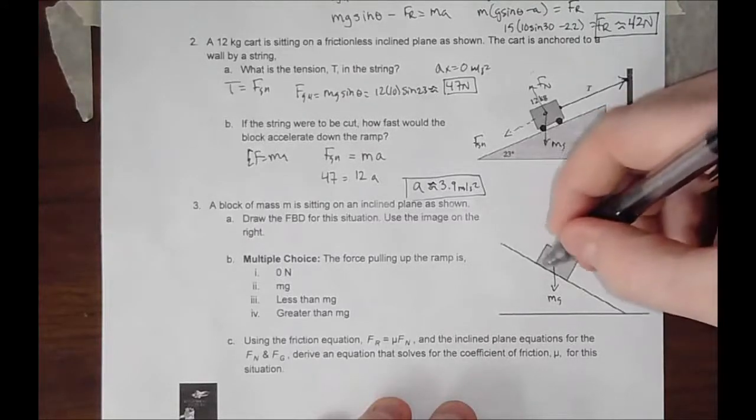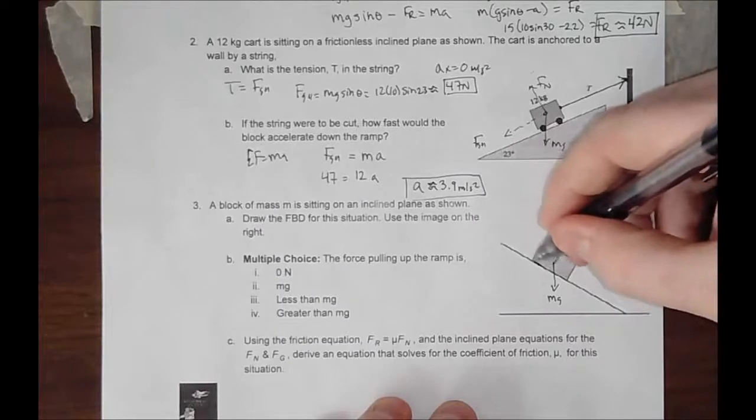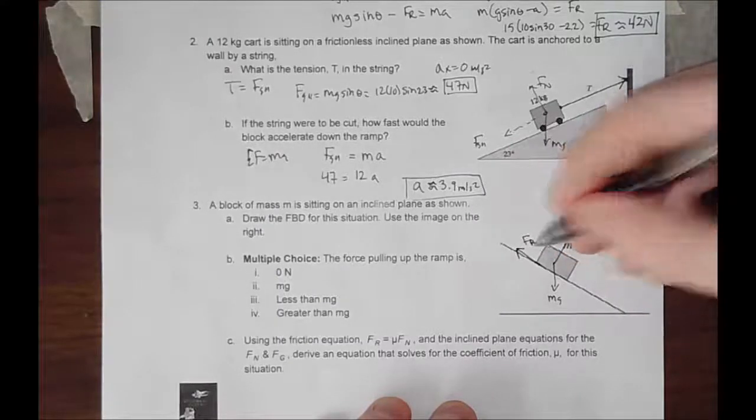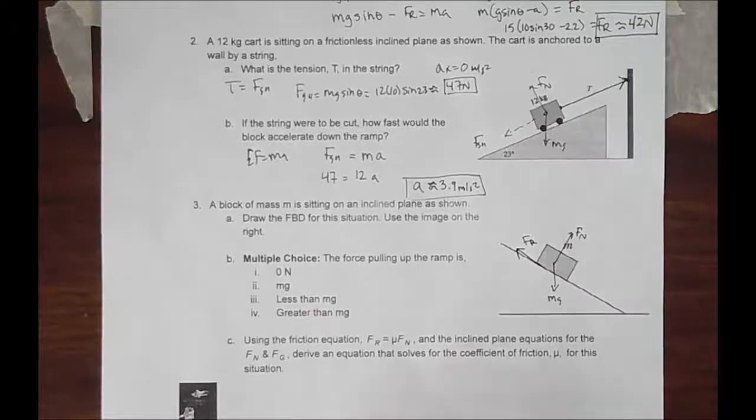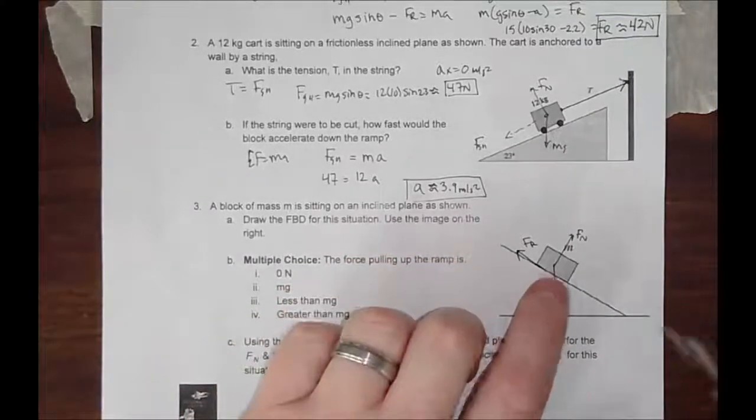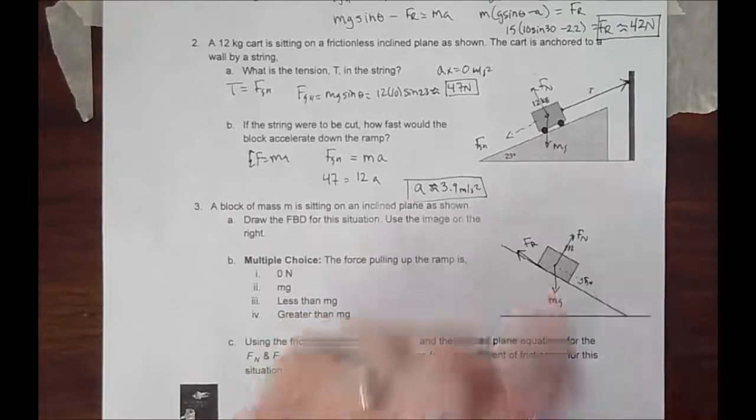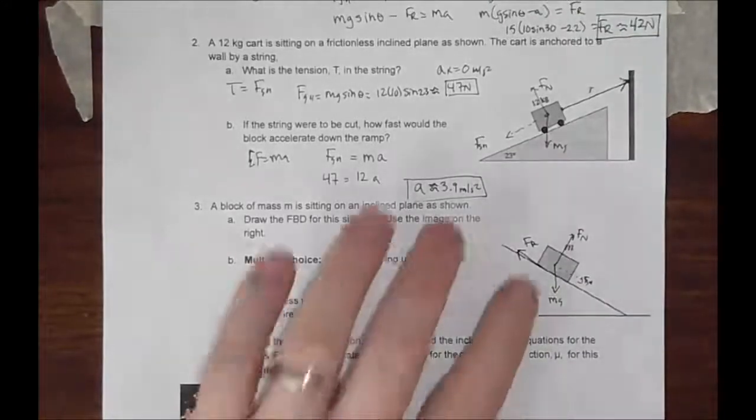There is a frictional force right here being exerted from the bottom up the ramp. This force of friction has to be greater than this component pulling down the ramp. Otherwise, the system will accelerate down the ramp.